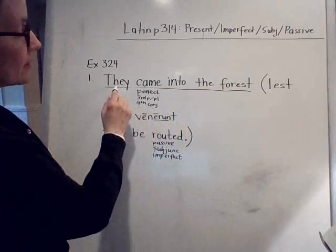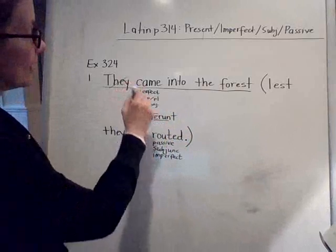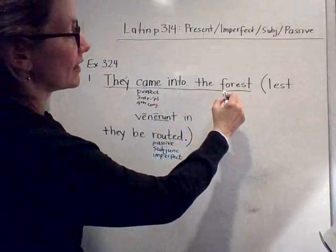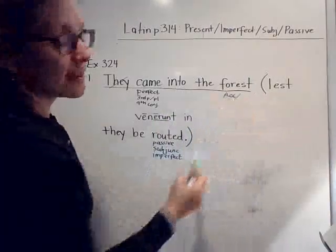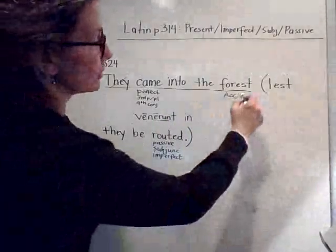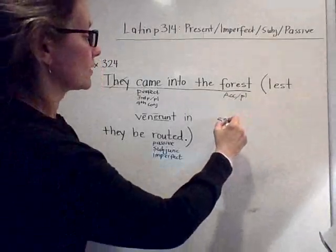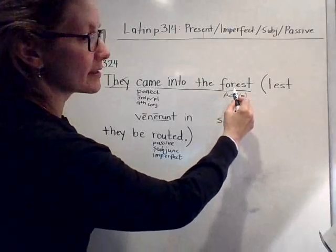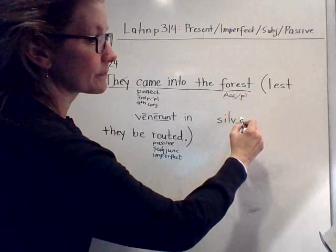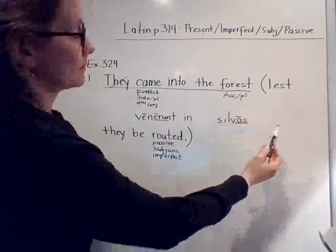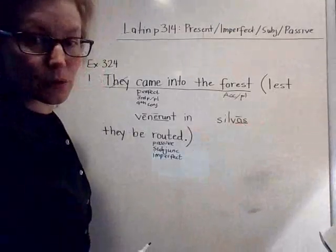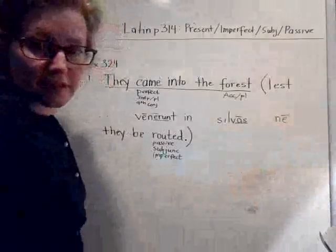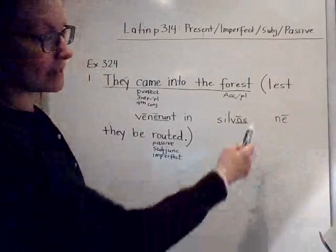The pronoun is wrapped up in our verb, so we don't need to worry about translating that separately. 'Into' is 'in,' but it shows motion, so instead of the ablative, this takes the accusative. 'Forest' is one of those nouns always in the plural — the stem is 'silv-,' and the ending for accusative plural in the first declension is '-as.' 'Lest' is another way of saying 'in order that they may not,' so we use 'ne' for the negative instead of 'ut.'